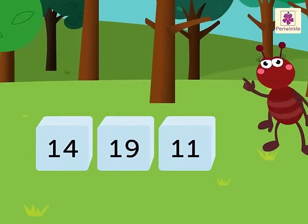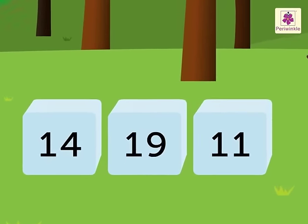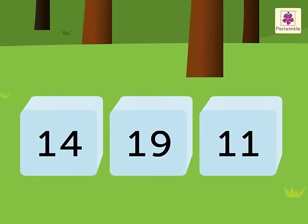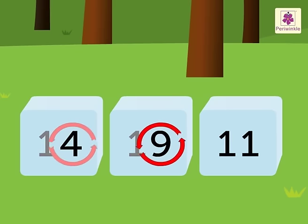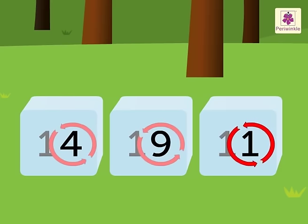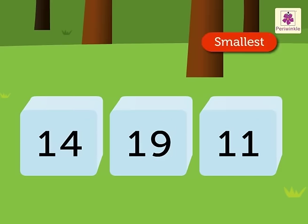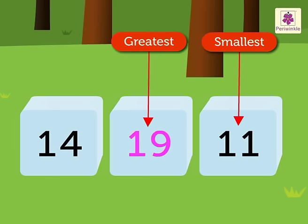Look, Taub got 3 new numbers to arrange in ascending order. They are 14, 19, and 11. Here, there are 4 ones in 14, 9 ones in 19, and 1 one in 11.